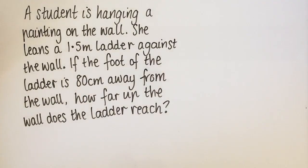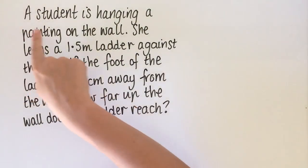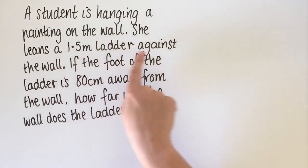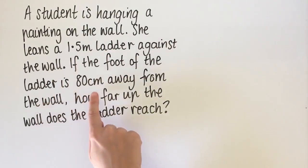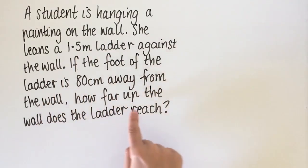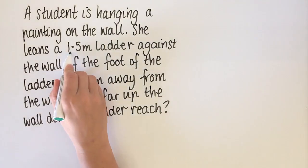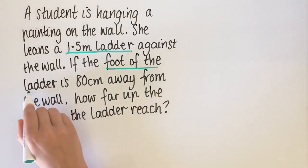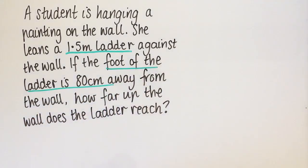So this is our first worded question. There's a lot of information here that we need to take in. A student is hanging a painting on the wall. She leans a 1.5 metre ladder against the wall. If the foot of the ladder is 80 centimetres away from the wall, how far up the wall does the ladder reach? The key information is: a 1.5 metre ladder, the foot of the ladder is 80 centimetres away from the wall, and we need to find how far up the wall the ladder reaches.